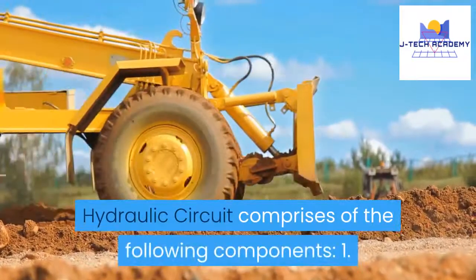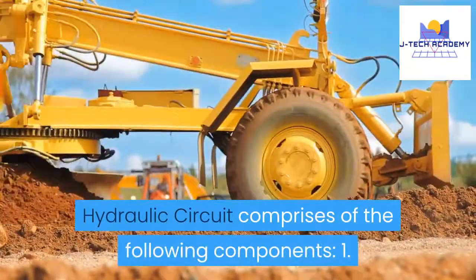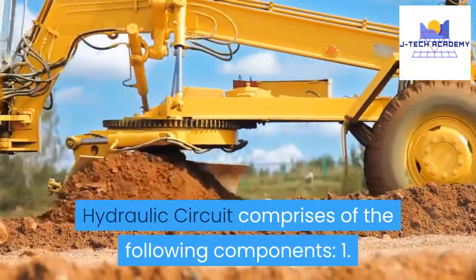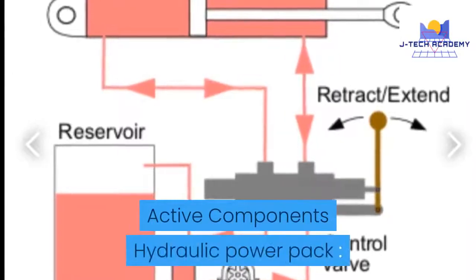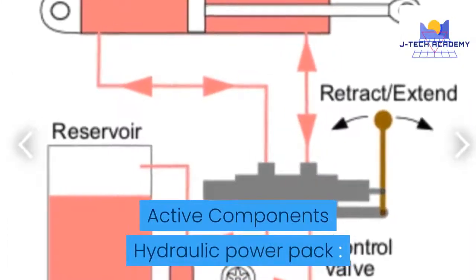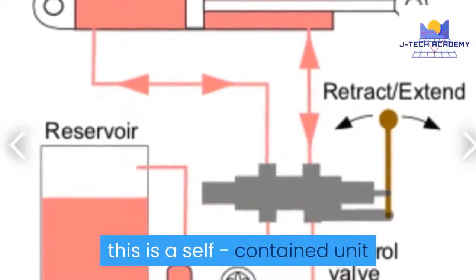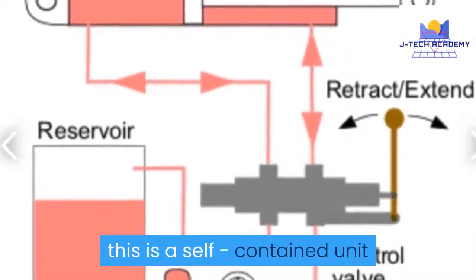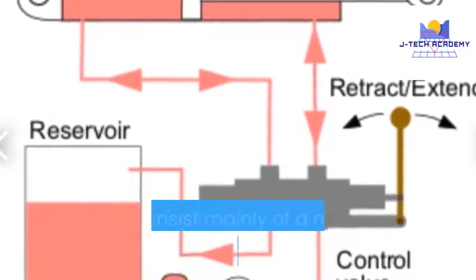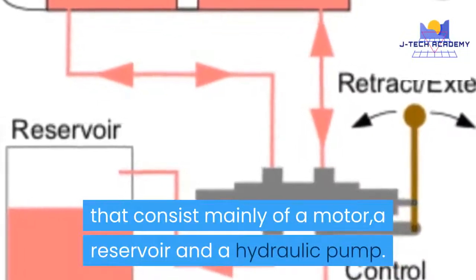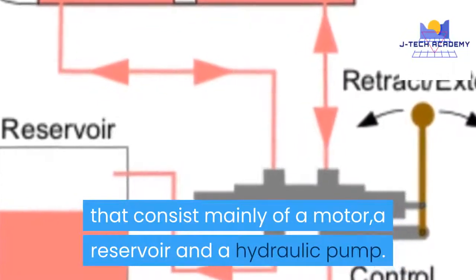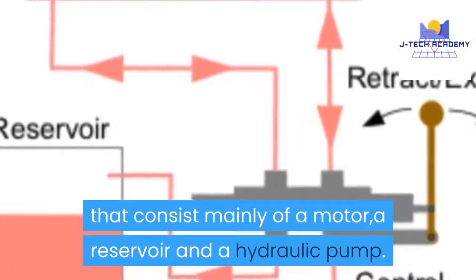The hydraulic circuit comprises the following components. First, active components — the hydraulic power pack, which is a self-contained unit that consists mainly of a motor, a reservoir, and a hydraulic pump.